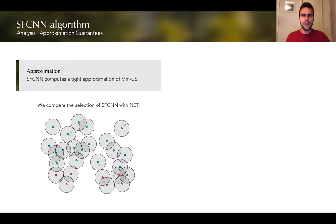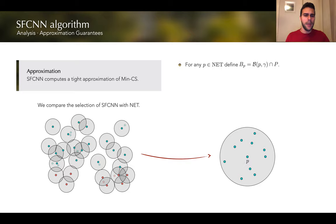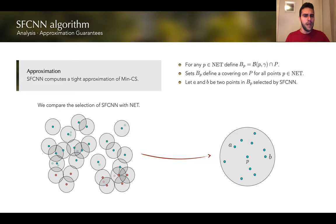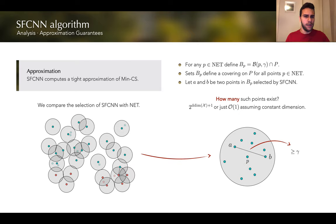First, we show that the SFCNN algorithm computes a tight approximation of the min CS problem. We do this by a direct comparison with the resulting subset of the NET algorithm. For any point p selected by NET, consider the points at distance at most gamma from p. If two such points were selected by SFCNN, we can show their distance must be at least gamma. By a simple packing argument, this is enough to show a constant number of points per each point selected by NET, assuming constant dimension, which yields the approximation factor for SFCNN.